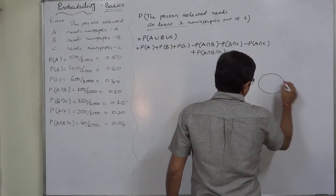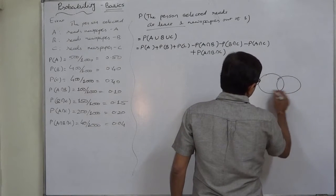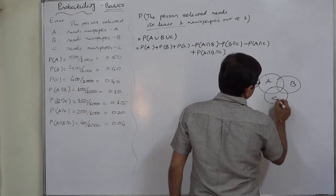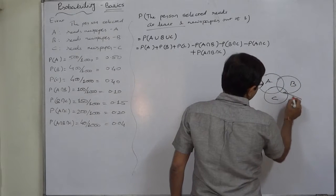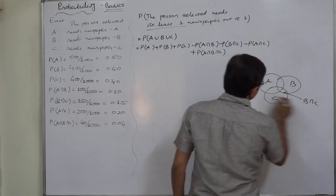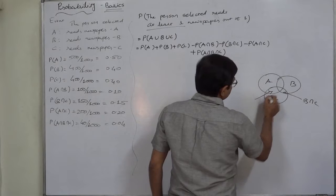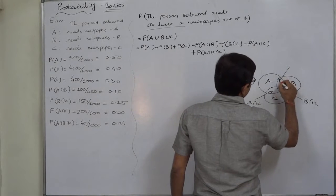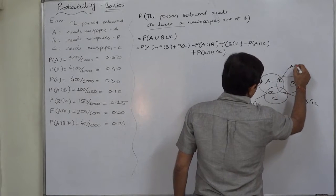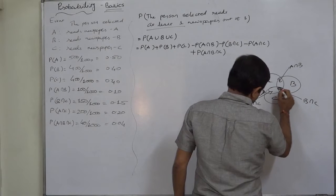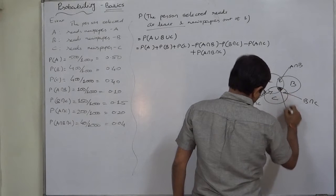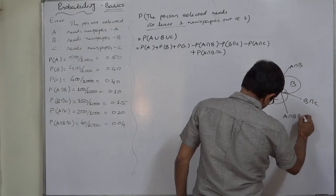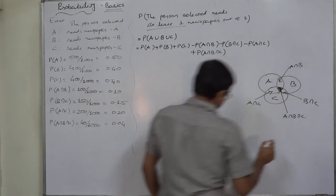Just as a guideline, you can use this Venn diagram of three events. This segment represents B∩C, this segment represents A∩C, this segment represents A∩B, and this segment represents A∩B∩C.